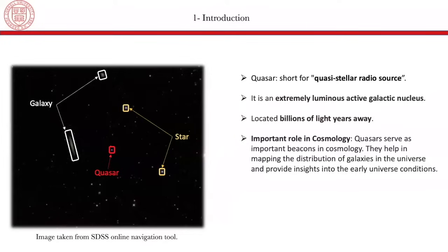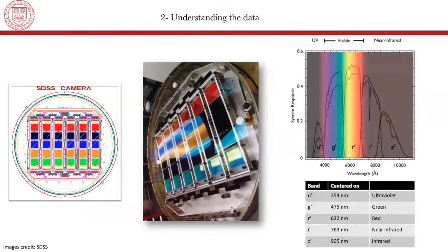And in order to take these pictures, the SDSS telescope uses this camera. This camera contains five different filters. We can see on the left a diagram of these filters. Each different color represents a different filter. And here in the middle, we have a real photograph of the camera of the telescope. And here on the right, we have the representation of the different filters versus the wavelength in angstroms. So we have the U, G, R, I, and Z filters.